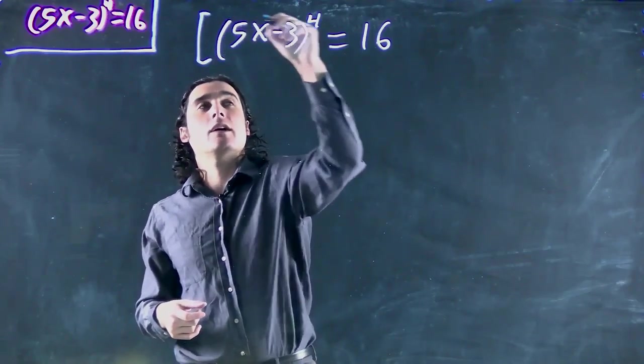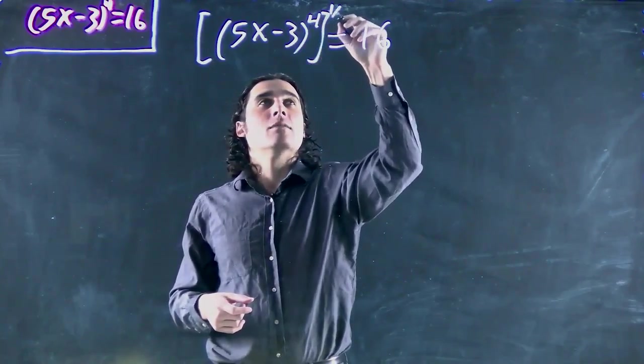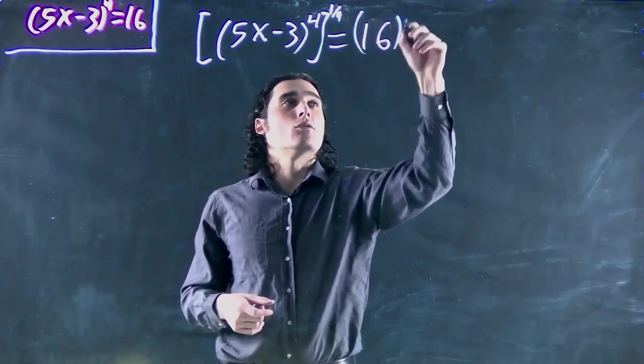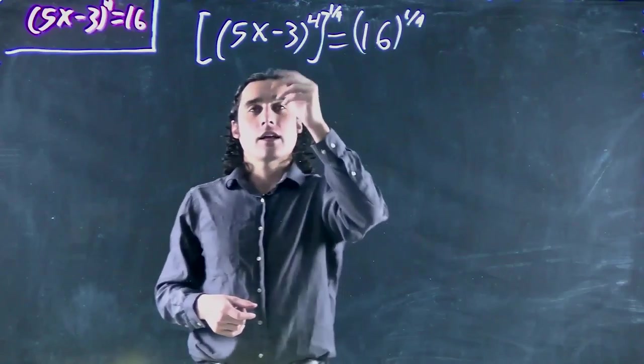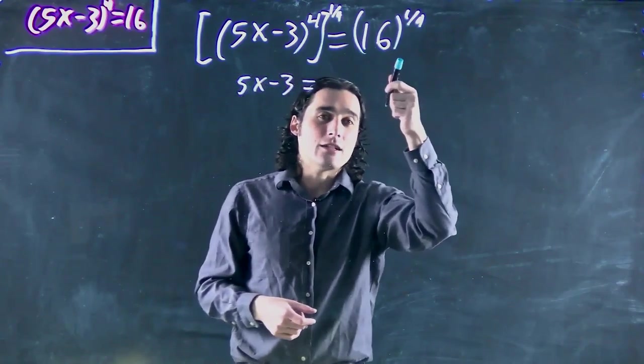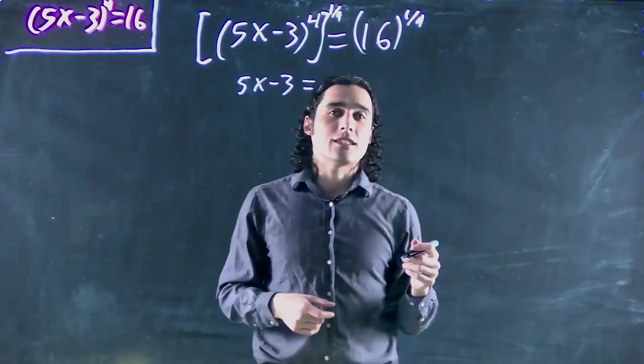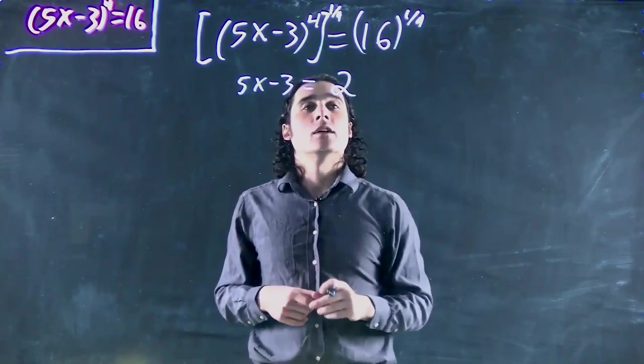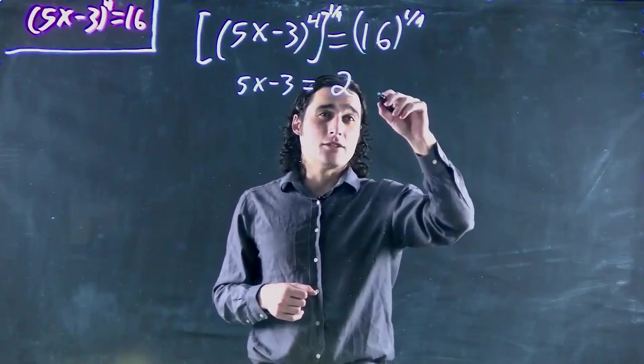So I'm going to do square brackets, both sides to the power of 1 over 4, and so this just becomes 5x minus 3, and that's equal to the fourth root of 16. Punch in our calculator, we should get 2, or minus 2.